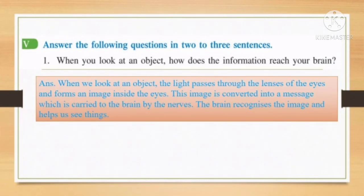Let's start with the first question. When you look at an object, how does the information reach your brain? The answer is, when we look at an object, the light passes through the lenses of the eyes and forms an image inside the eyes. The image is converted into a message which is carried to the brain by the nerves. The brain recognizes the image and helps us to see things.